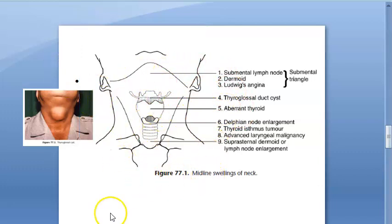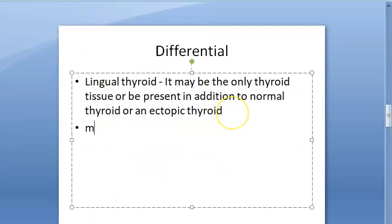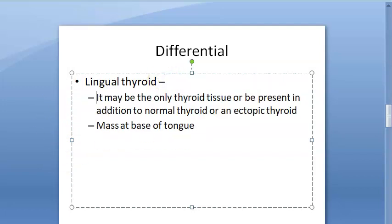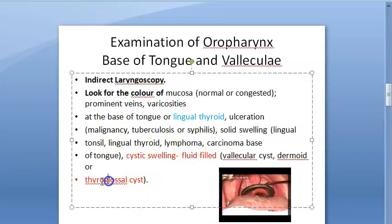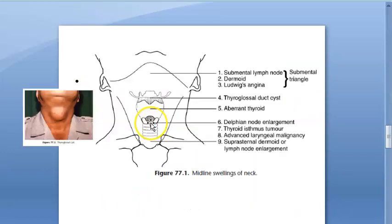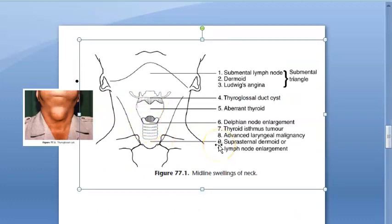Lingual thyroid is more like a mass at the base of tongue, not exactly a neck mass. A thyroglossal cyst can also occur at the base of tongue. For midline swellings of the neck, this much coverage should be enough.